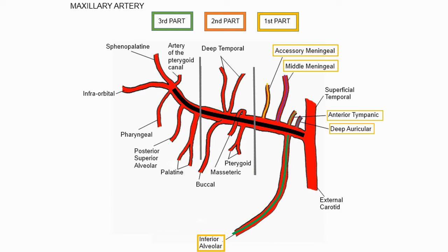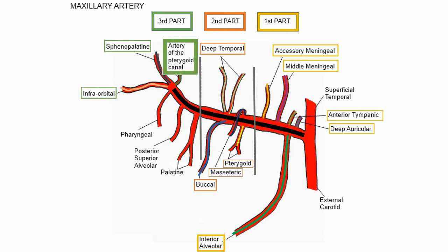The second part has four branches: the deep temporal artery, pterygoid artery, masseteric artery, and buccal artery. The third part has six branches: the sphenopalatine artery, artery of pterygoid canal, infraorbital artery, pharyngeal artery, posterior superior alveolar artery, and palatine artery.